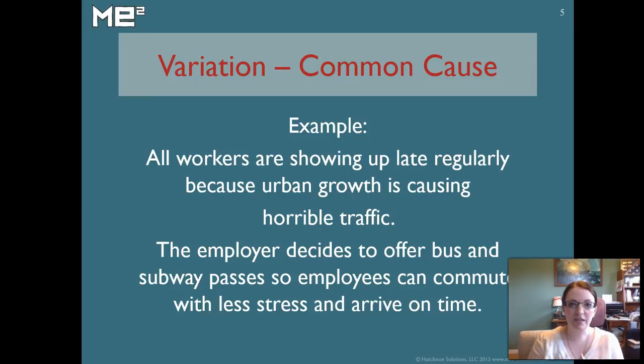But if you're the manager of a company and you realize that all of your employees are getting to work half an hour to 15 minutes to 45 minutes late because the city has grown so much, traffic has gotten so bad, that's a case where common cause variation has become a problem. And in this case, the employer might decide to start offering bus passes or subway passes because they know that that will take the strain off their workers, they won't have to stress about driving into work anymore, and they'll be able to get to work dependably because those buses and those trains go on a pretty solid schedule.